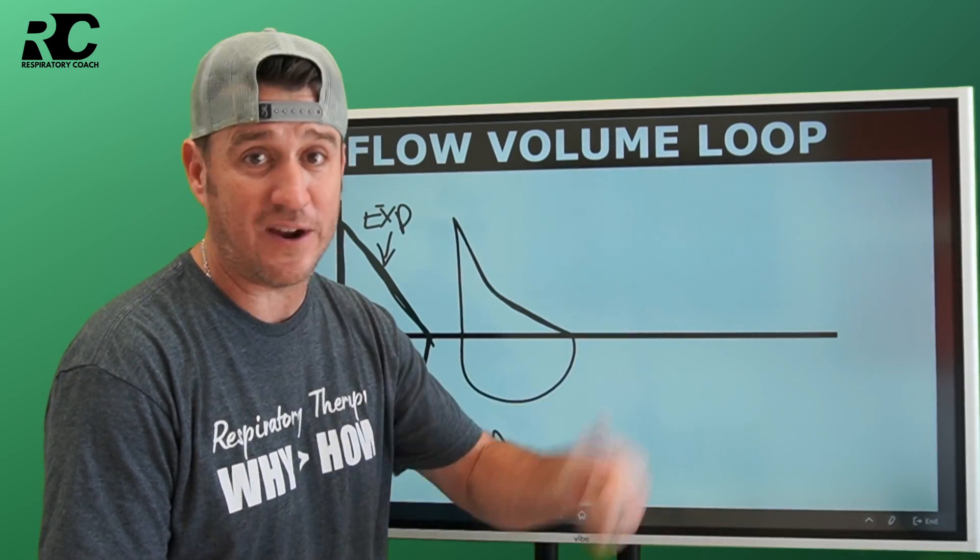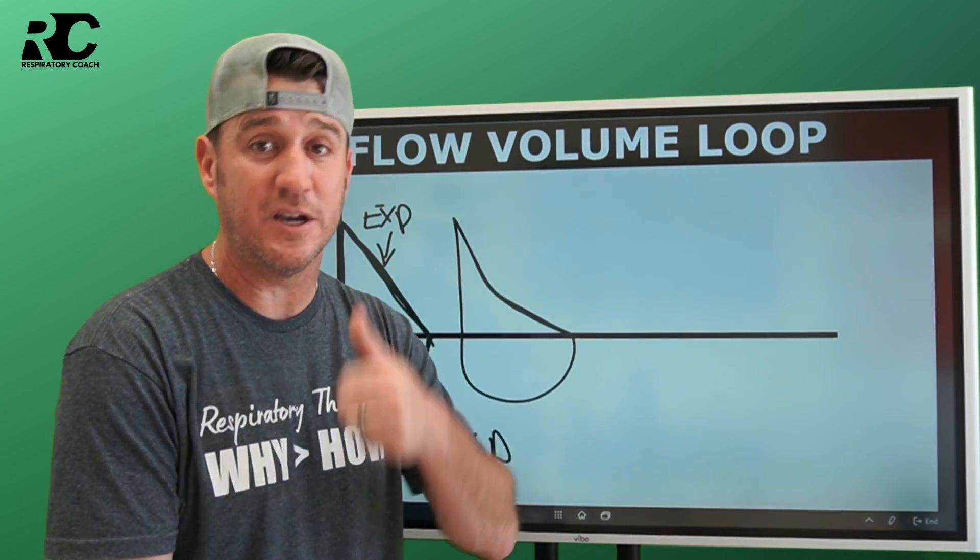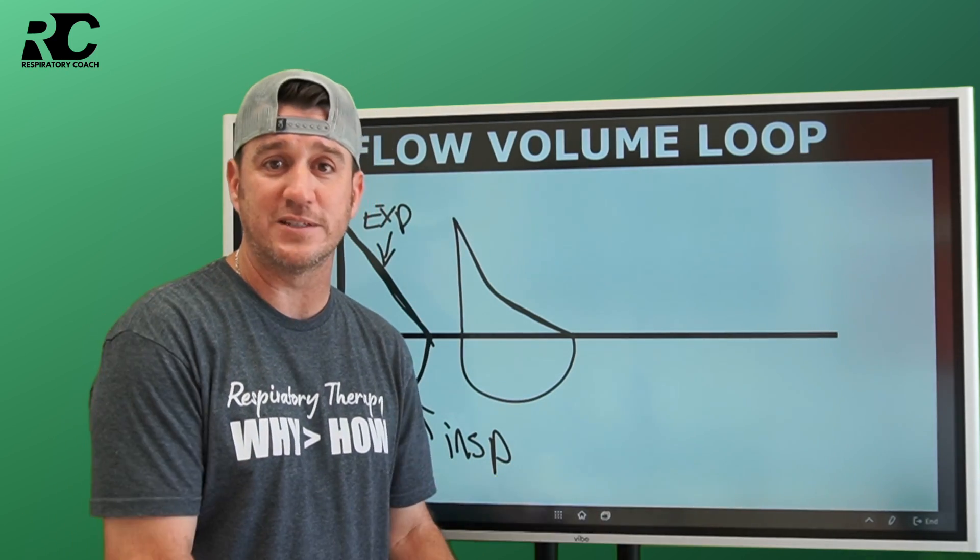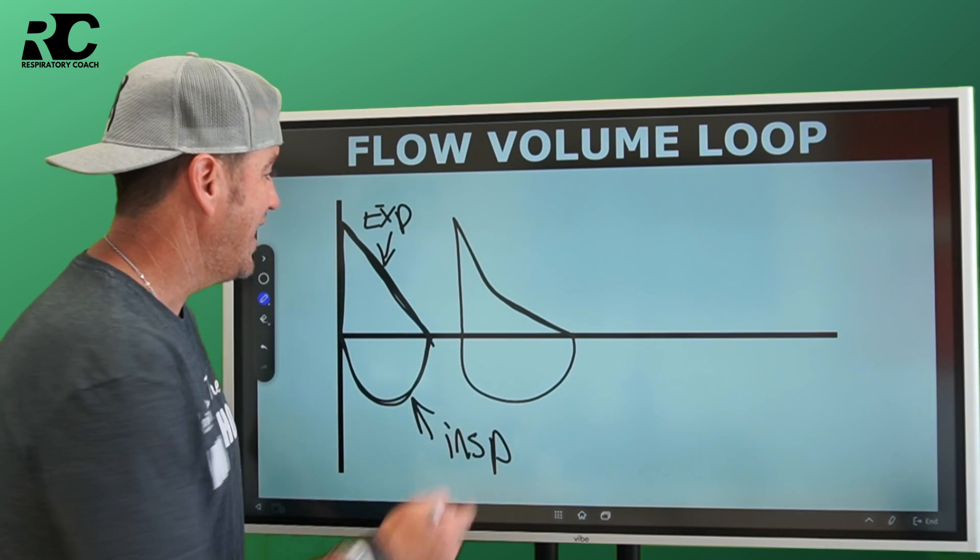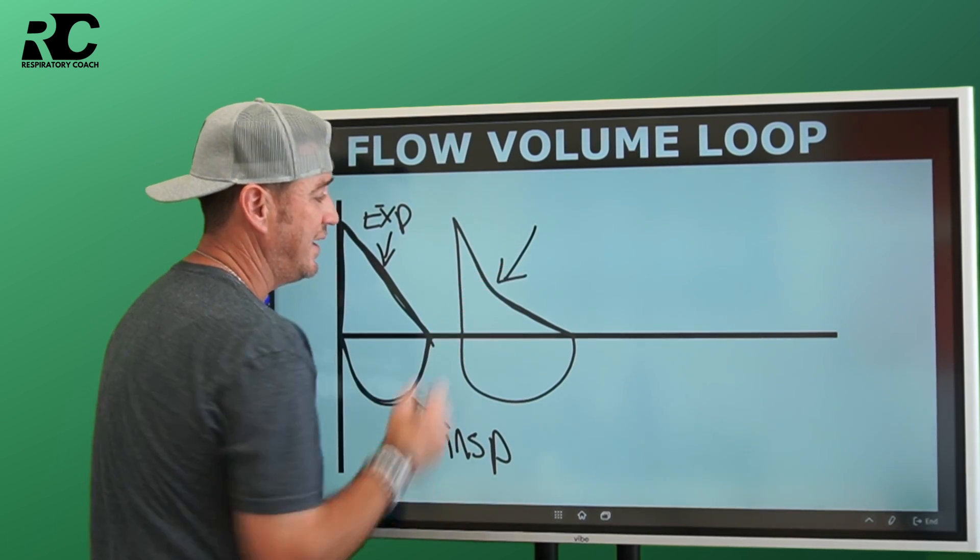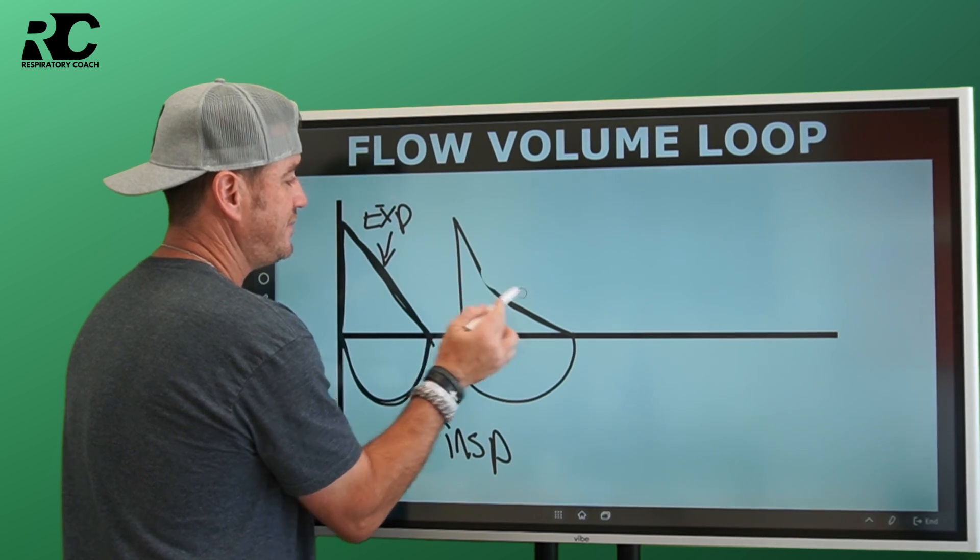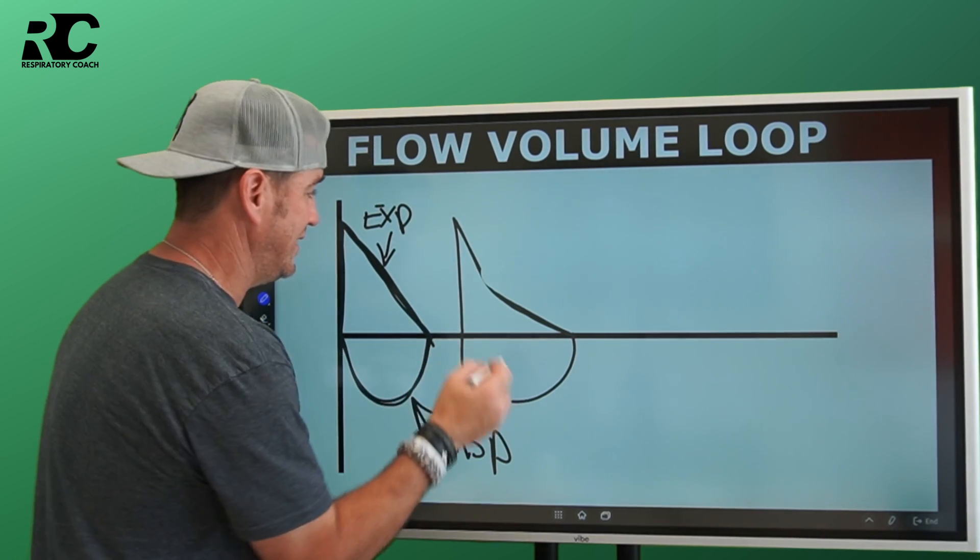Real simple. Go down the list and pick which one is obstructive. It's either going to be cystic fibrosis, bronchiectasis, asthma, chronic bronchitis, or emphysema. We see that this scoop right here is the problem. Let me clean this up for you for just a second. I really want you to see this.